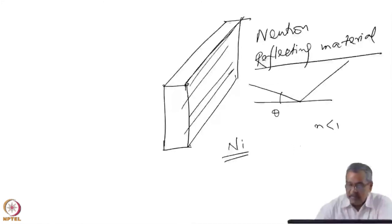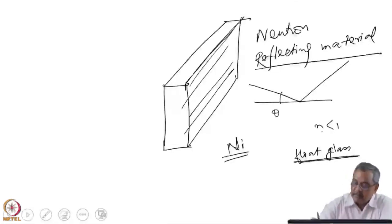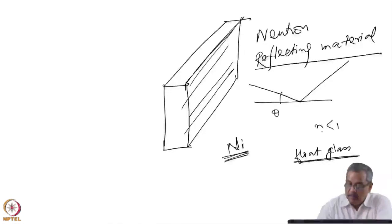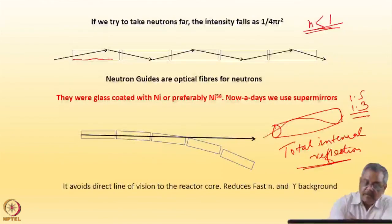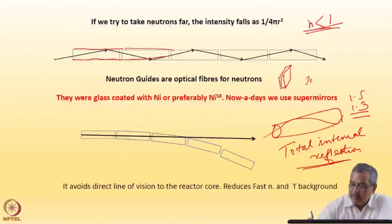You coat very flat glass pieces, known as float glass, with a good material for neutron reflection. Nickel is good because it has a reasonably large critical angle and is also a good metal to handle. The guides at Dhruva are nickel-coated pieces with dimensions of 25 mm by 100 mm.